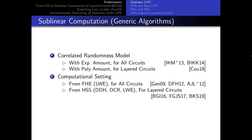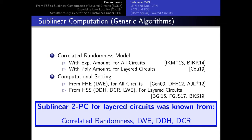I should start by mentioning that our protocol is of course not the first one to achieve sublinear two-party computation. This was known both in the correlated randomness model and from a variety of computational assumptions. Our contribution, as it were, is to add LPN to this list. Our techniques are very much derived from two lines of work: the HSS line of work, and CUTO 19 in the correlated randomness model.